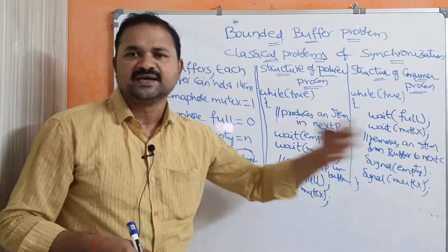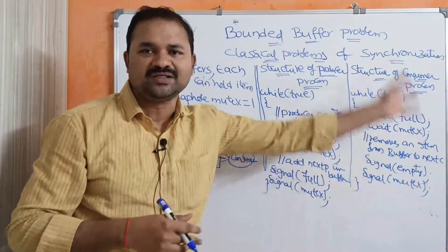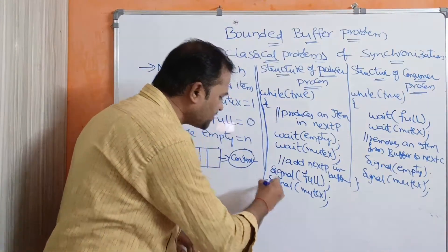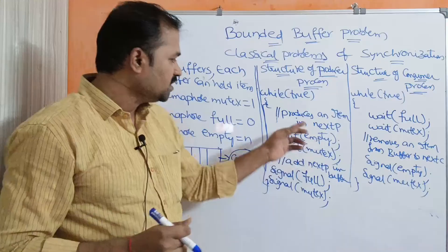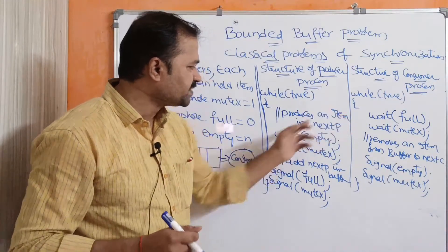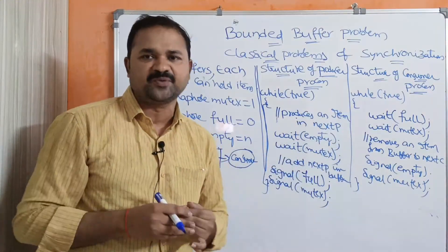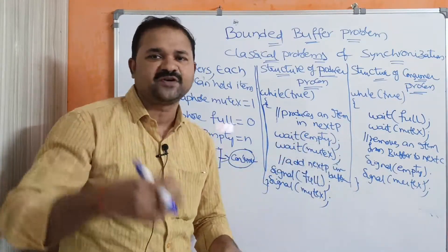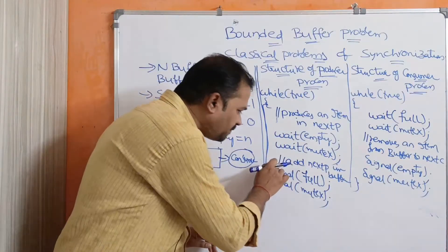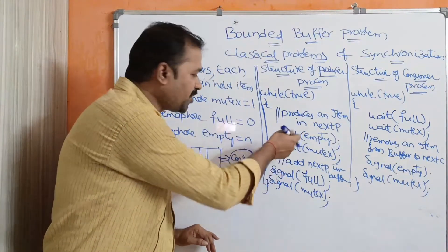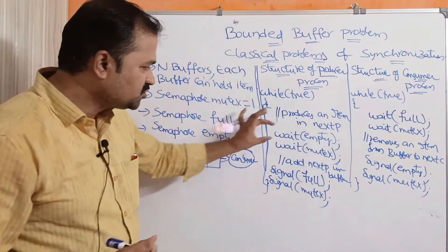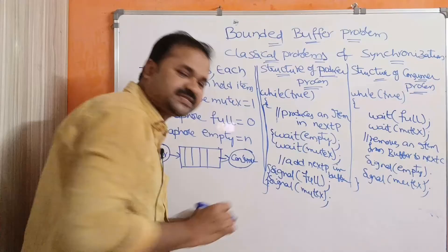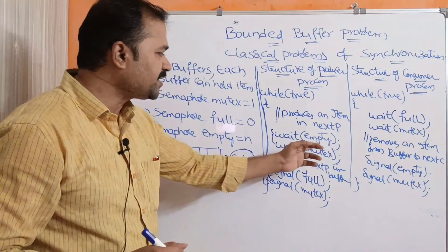Let us look at the structure of the producer process and then the structure of the consumer process. The structure of the producer process is while(true) — this is an infinite loop, so this condition is always true. The producer process produces an item stored in nextP (P stands for producer). This part is the critical section, with the entry section on top. These two statements are the entry section, and these two statements are the exit section.